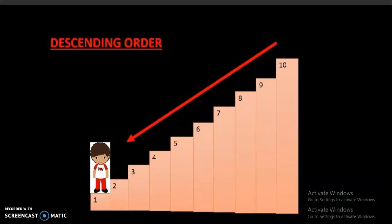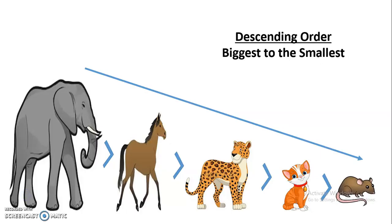In descending order, the numbers go on decreasing or become smaller and smaller. In this picture, you can see the biggest animal is elephant and the smallest animal is rat. From biggest to the smallest, we call it descending order.